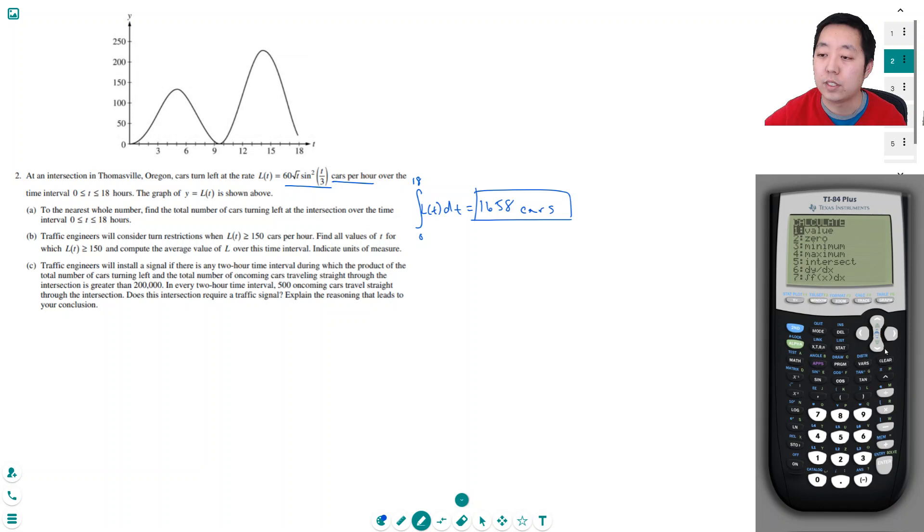And then, now I can calculate an intersection. So first intersection occurs at 12.4283. The second intersection would occur at, let's put the guess closer to here, 16.1217.